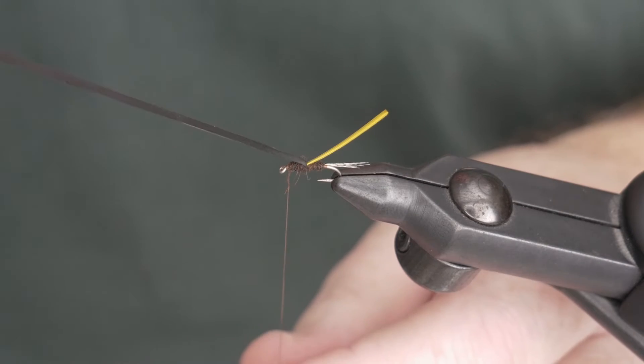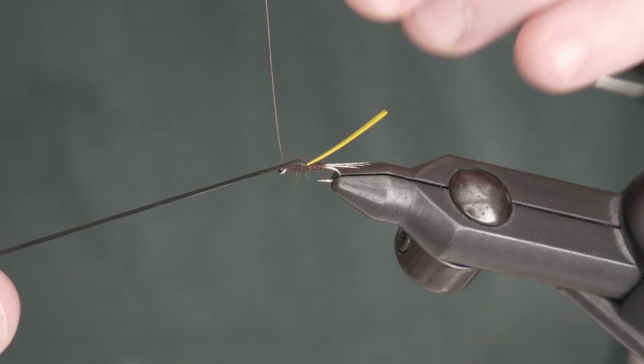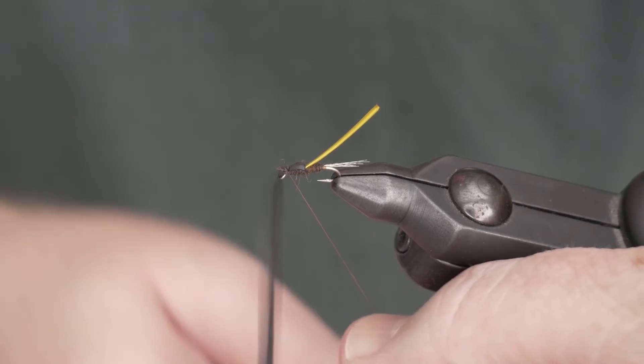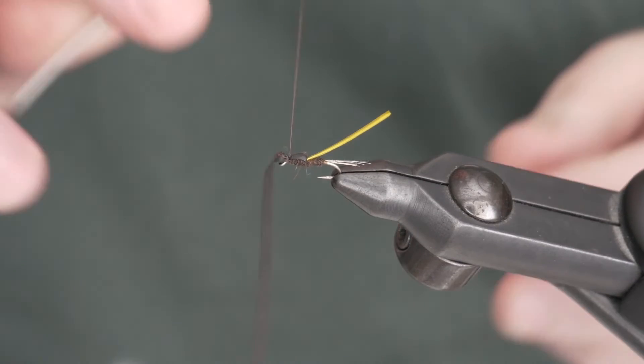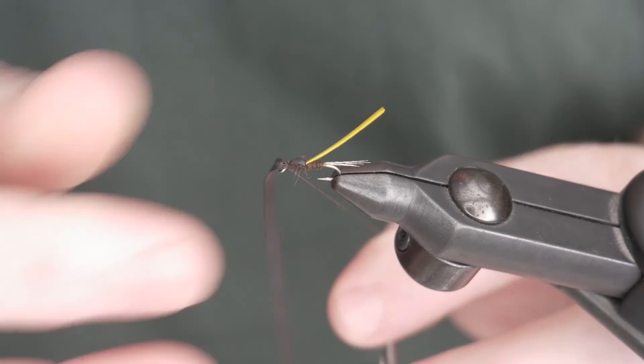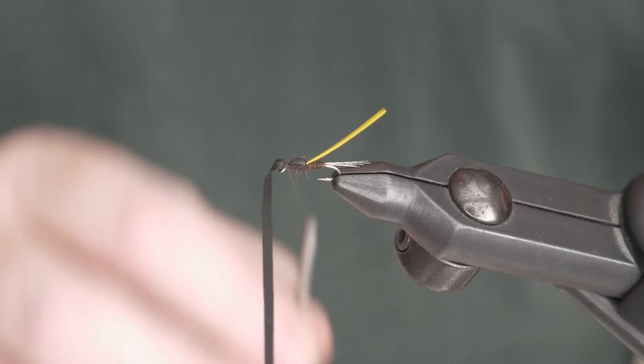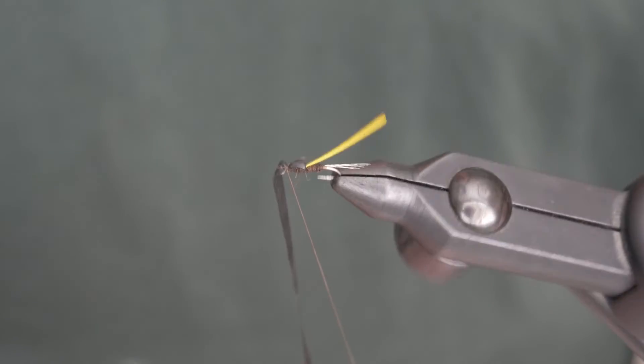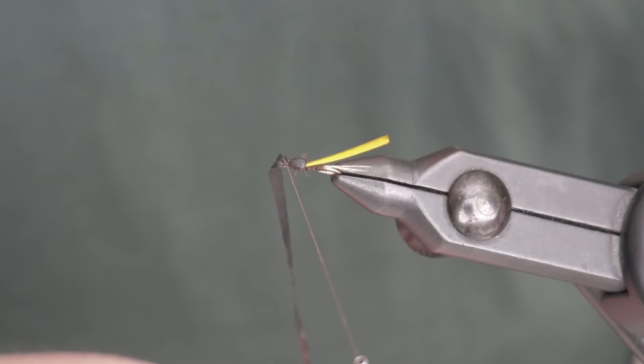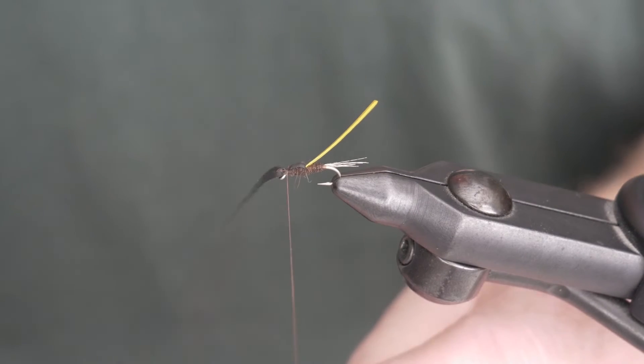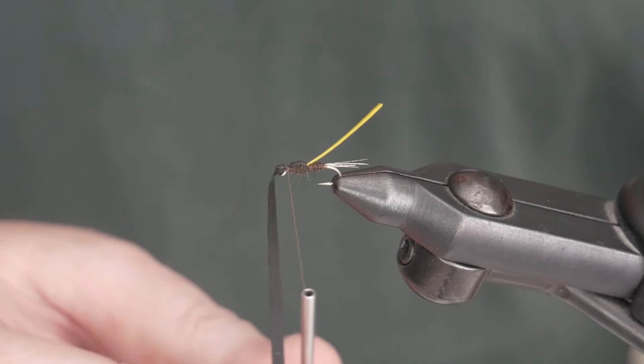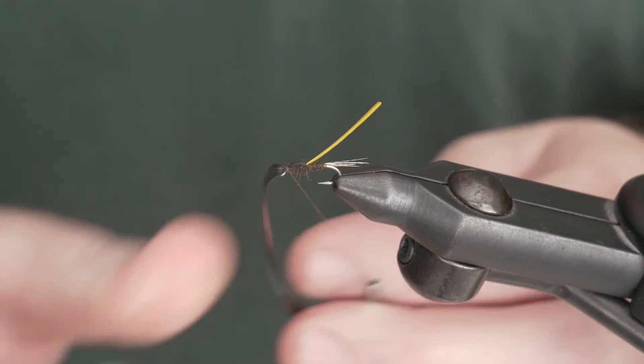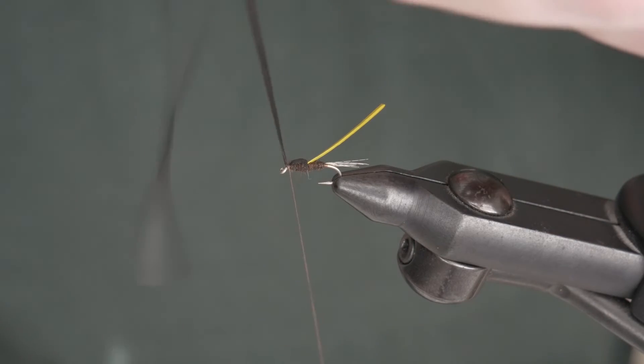So next we're going to pull our nymph skin over the top of the thorax and tie it in. Keep tension on the nymph skin until you get tension on the thread. Throw two, three wraps on it and give it a look. Make sure it looks like it's centered on the top of the hook. I think we look good here. So once we feel like we have it centered on the hook, I'll throw a couple more wraps in and just trim it off.